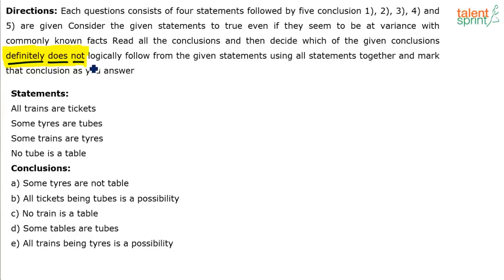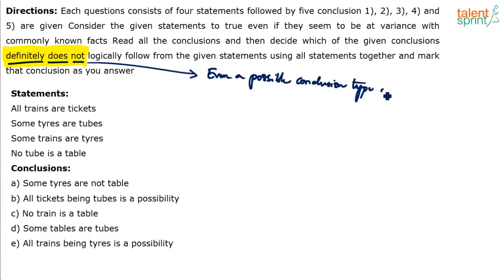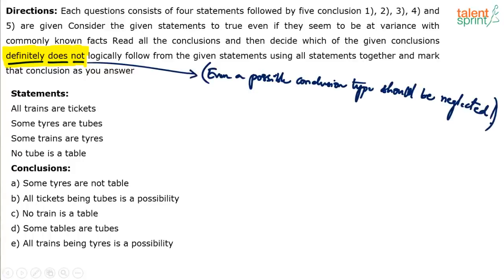When you say 'definitely does not follow,' even the possibility should be considered as wrong. Even if a conclusion is possible — it is only possible, not definite — it should be neglected. If a conclusion is a possibility type, you should not consider it as 'does not follow.' It has to be definitely wrong. The word 'definite' is important — definitely does not follow.